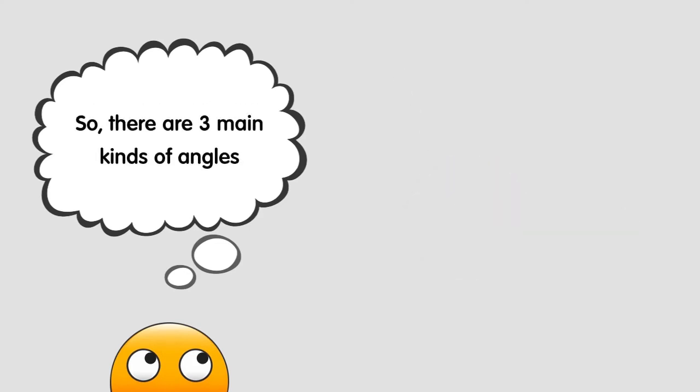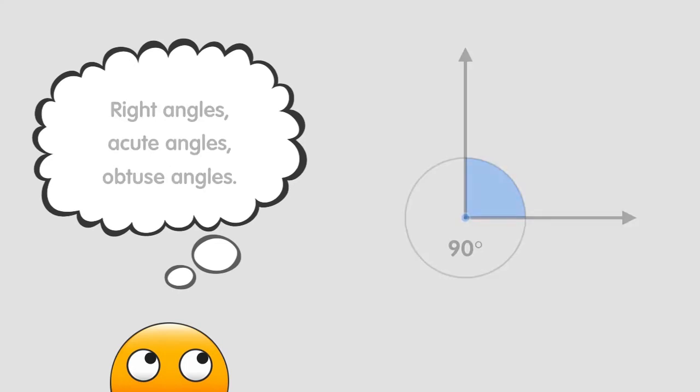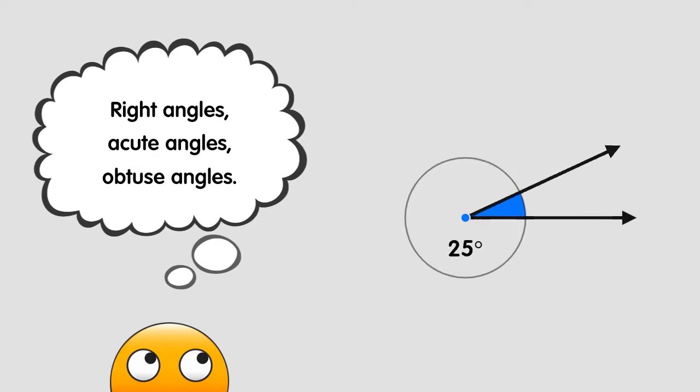So there are three main kinds of angles that you need to know about: right angles, acute angles, and obtuse angles.